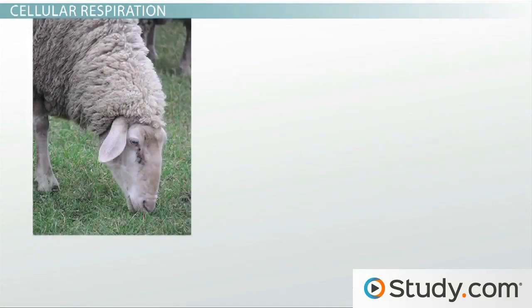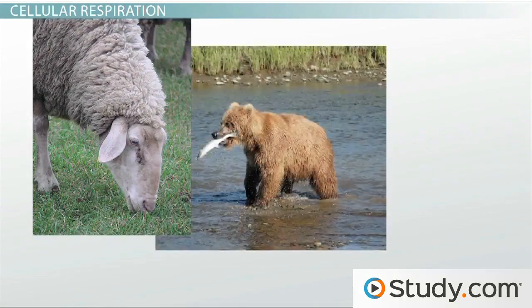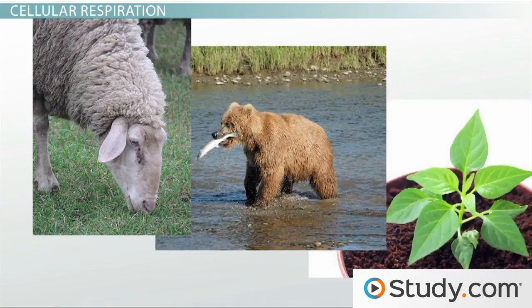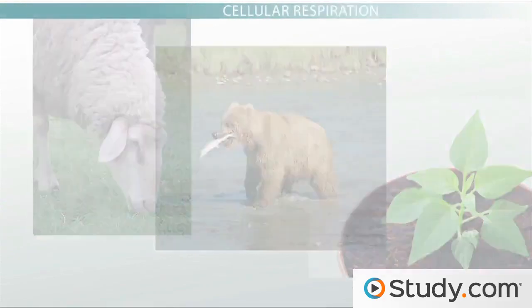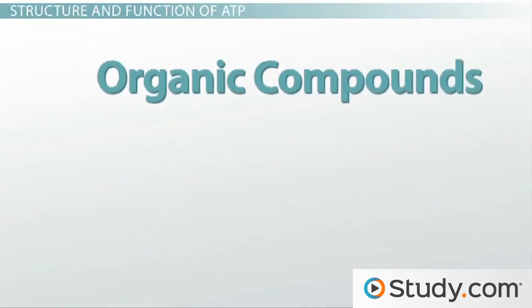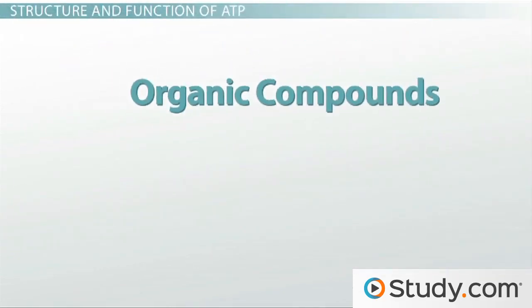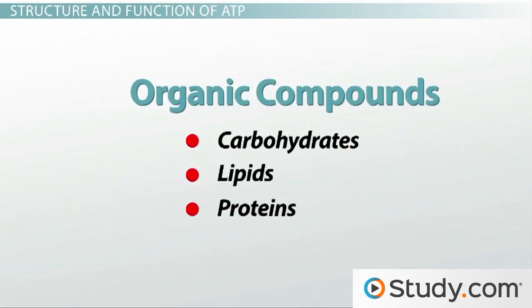Some organisms eat plants. Some organisms eat animals. Some organisms even make their own food, like in the case of plants and some bacteria. However, what we all do with that food is the same. Food contains important chemicals called organic compounds. You may remember that carbohydrates, lipids, and proteins are all organic compounds.